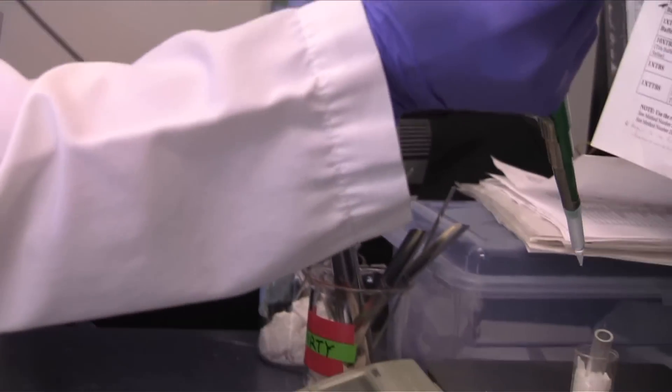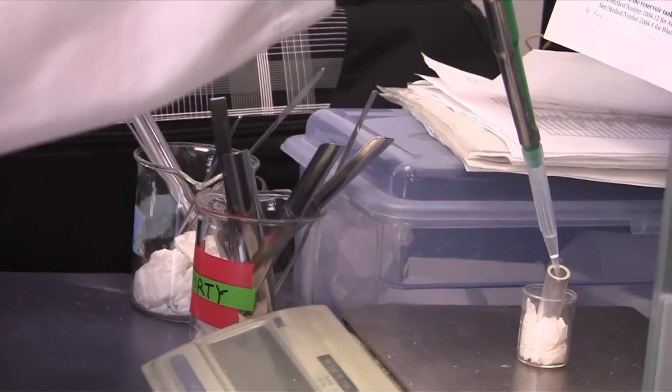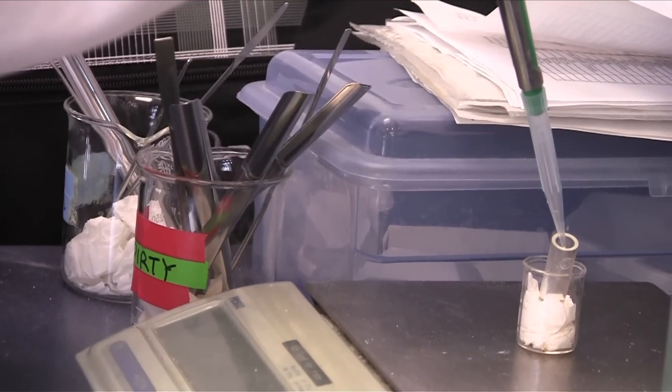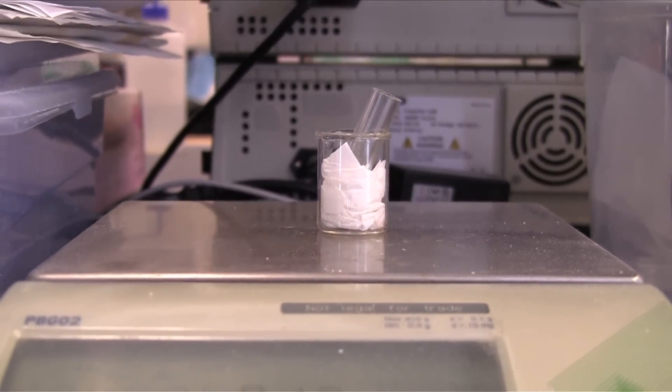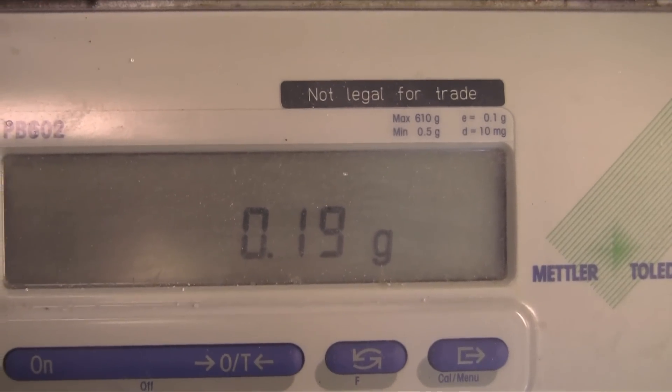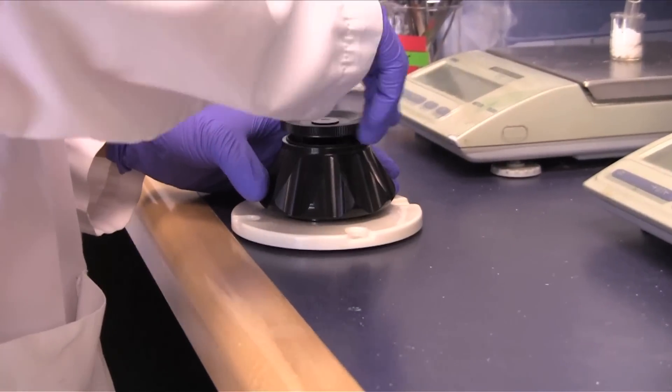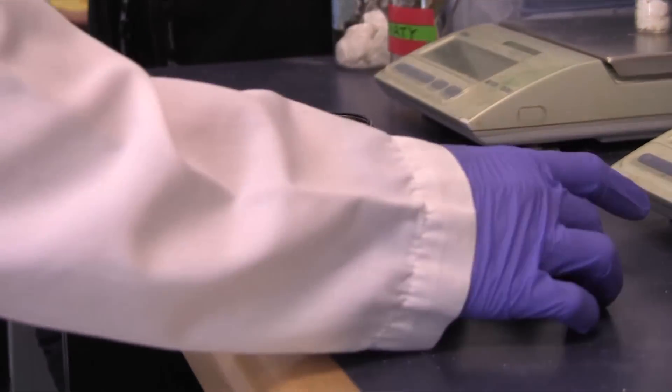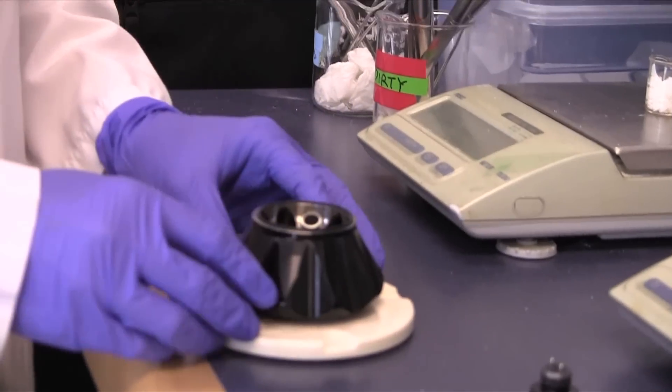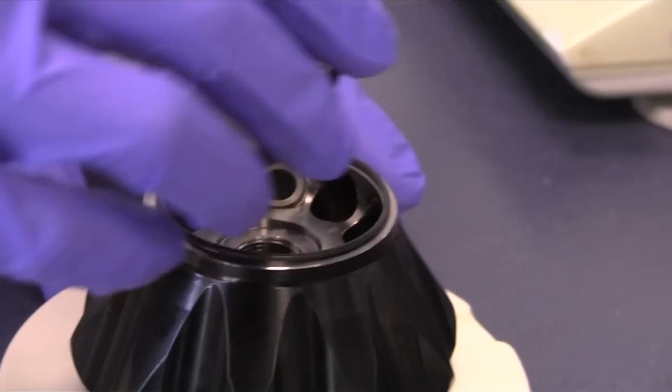Transfer the lysates from the microcentrifuge tubes to ultracentrifuge tubes and balance the weights using a scale. Load the tubes along with their matched balanced tubes into the ultracentrifuge.